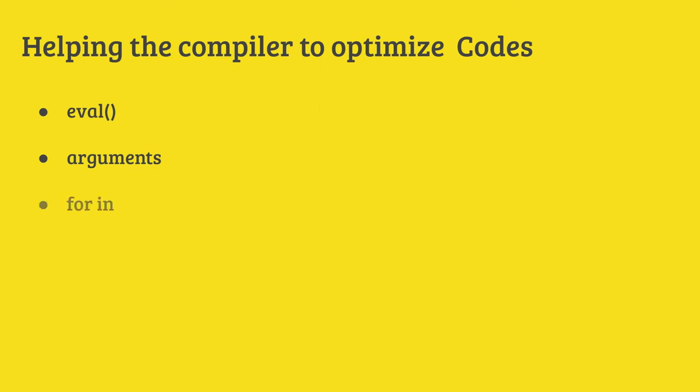There is for-in. With for-in, you can see the object. I just want to say that you should not use it.